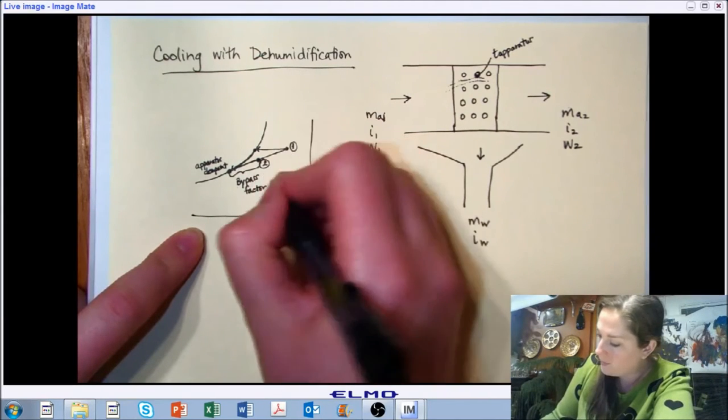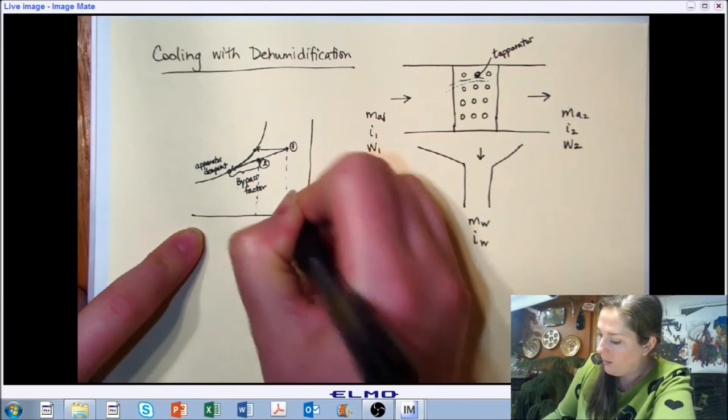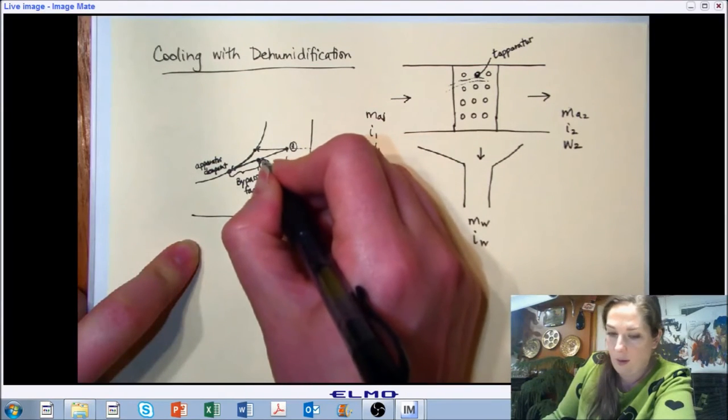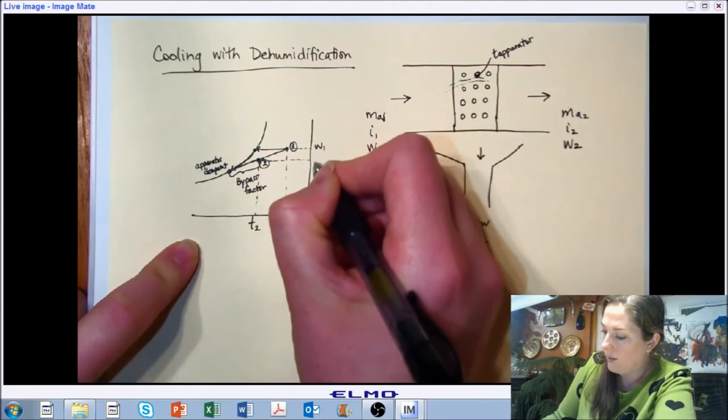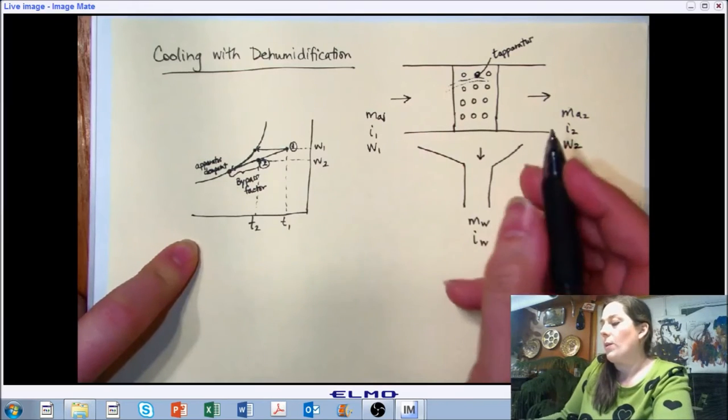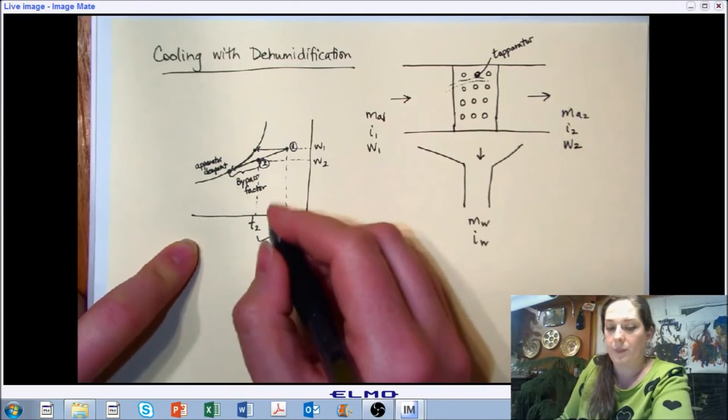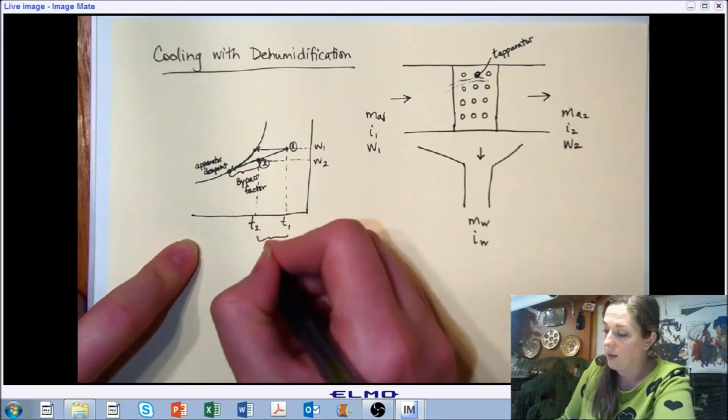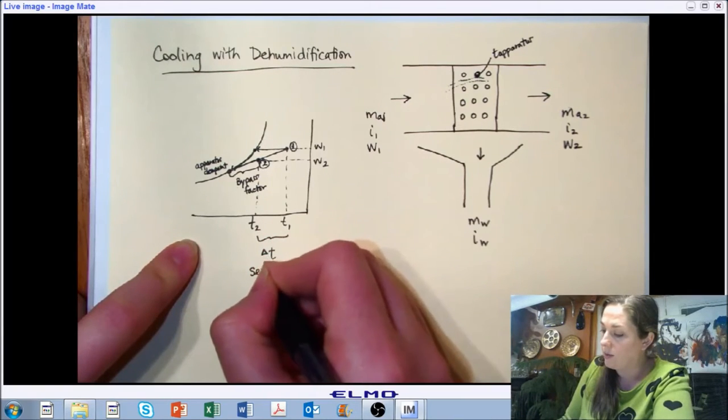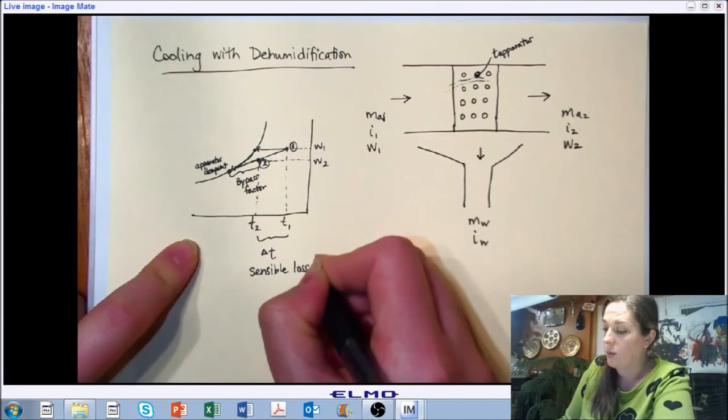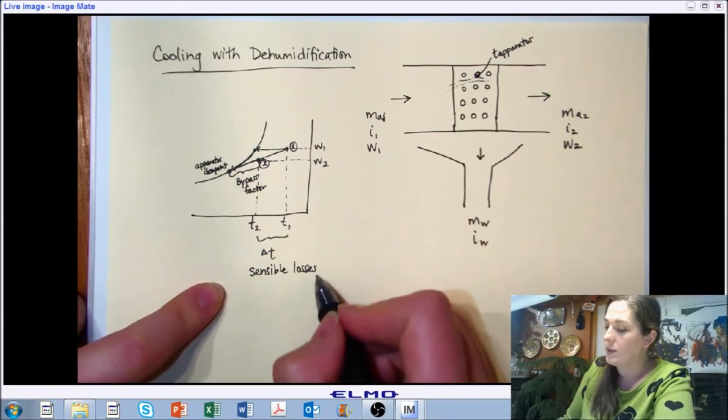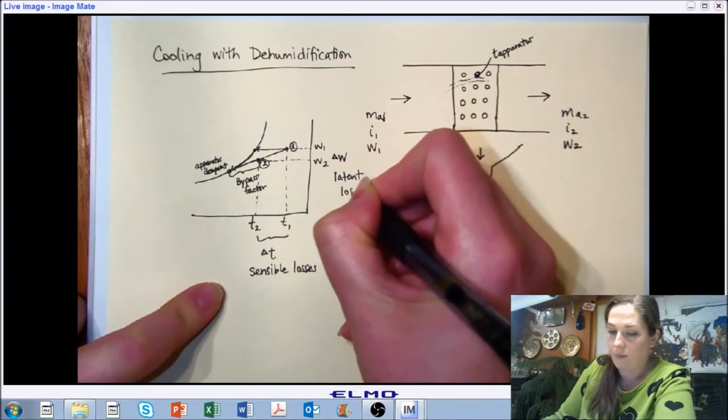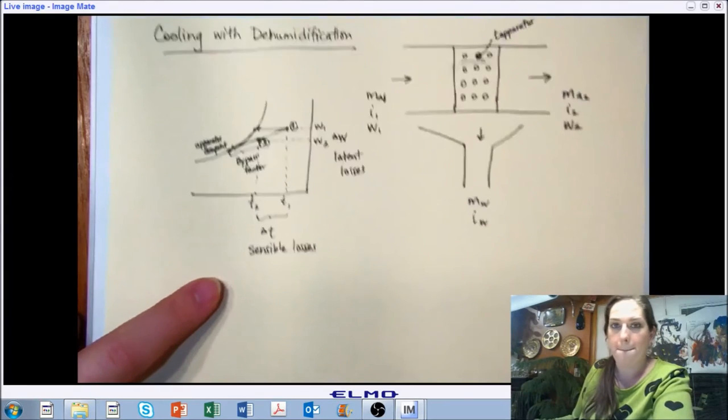From here, we have our final temperature and our starting temperature. And we have our starting and final humidity ratios. This is the first process we've seen that hasn't been sensible only. This change in temperature results in our sensible losses. Since we're cooling, we're trying to lose heat. So this results in our sensible losses. And this change in humidity ratio represents our latent losses.